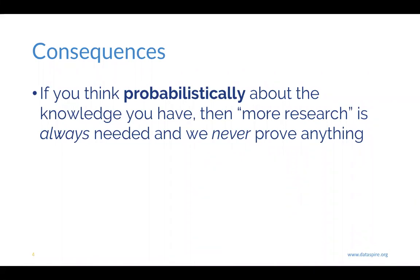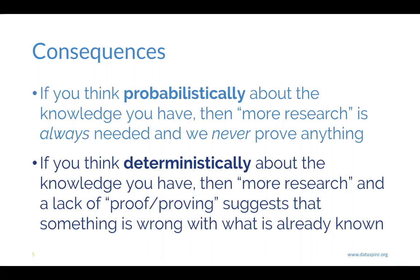We use the evidence that we have to make a conclusion — this is how science works. We collect evidence, use our best understanding of it, then go collect more. As more evidence comes in, we reassess, refine, elaborate, and develop our understanding of the phenomenon or system we're working with in natural and social sciences. Whereas if we think deterministically — black and white about knowledge — then a lack of proof suggests something is wrong in what we already know. This isn't how evidence-based knowledge generation works. It's important to come at sampling and inferences from a probabilistic mindset.